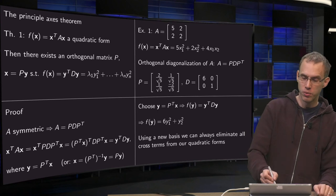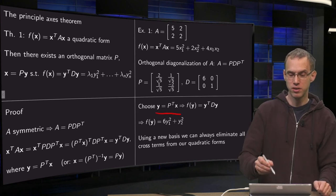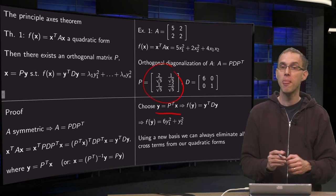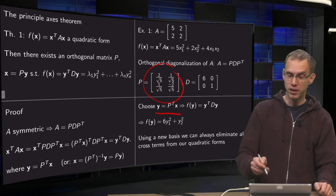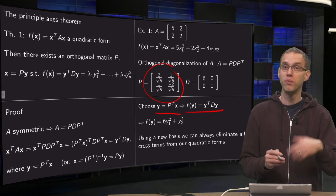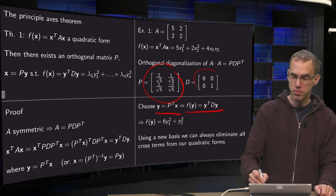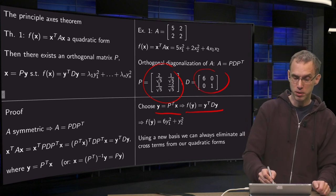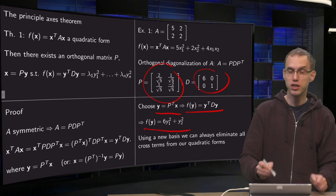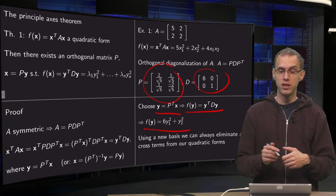So you choose y equals P transpose times x, with this orthogonal P over here. And then you know that your quadratic form is going to turn into y transpose times D times y, where the D is just this matrix. So your quadratic form becomes, in terms of y, 6y1 squared plus y2 squared.